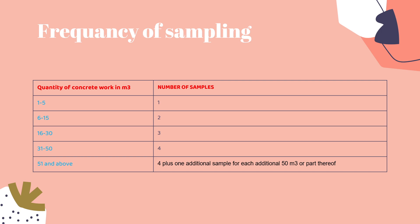This is a very important table given by the Indian code. If our quantity of work is 1 to 5 m³, then we shall cast one sample of the cube. If our work is 6 to 15 m³, then we have to cast two samples. If it is between 16 to 30, it is three samples. If 31 to 50, the number will be four. And if it is above 51, then four plus one additional sample for each additional 50 m³ or part thereof. You can note down this table.